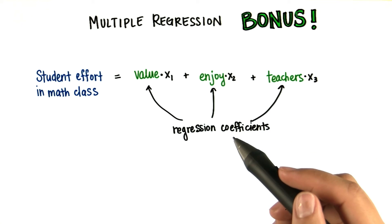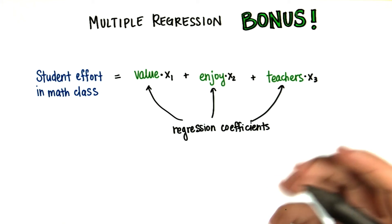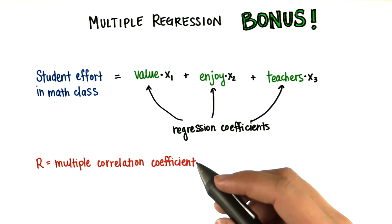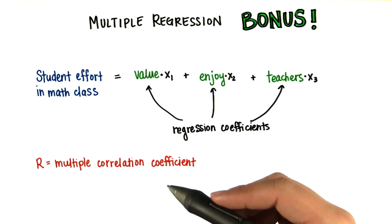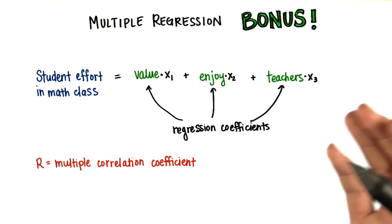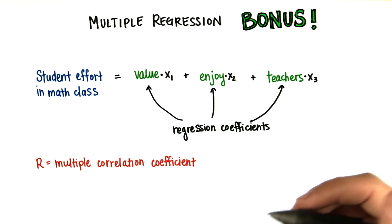Apart from the regression coefficients, most programs that conduct multiple regression will also provide a multiple correlation coefficient called r. This is similar in interpretation to Pearson's r, but it involves one outcome or response variable and more than one predictor variable. This tells us the strength of the relationship between y and the combined set of predictors.